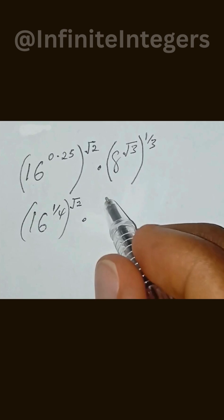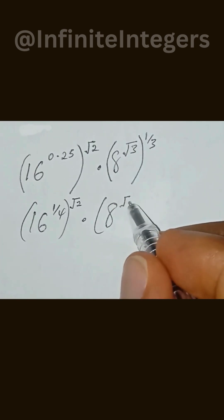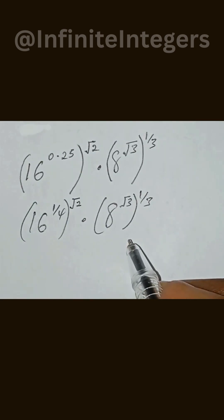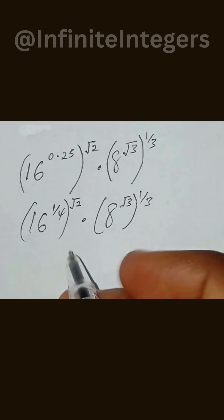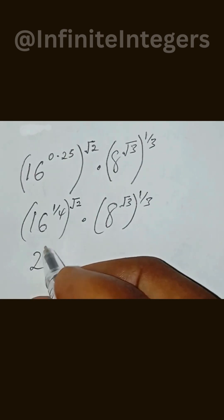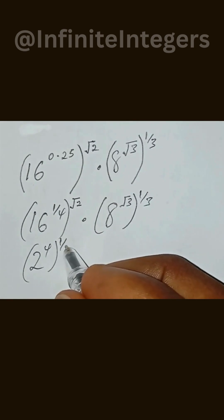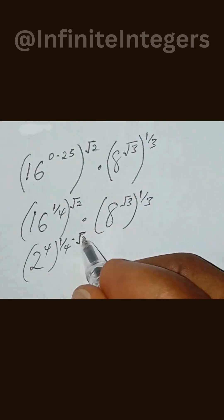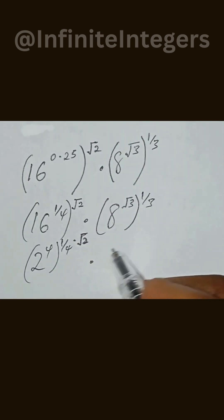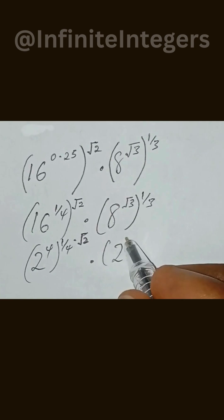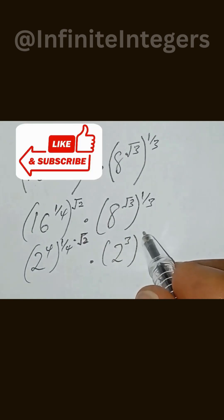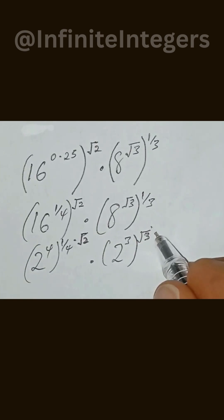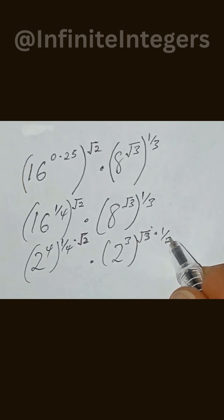Then multiply by 8 to the power of square root 3, in brackets, to the power of 1 over 3. Let's simplify: 8 and 16 — we write 16 as 2 to the power of 4, in brackets, to the power of 1 over 4. Then multiply by square root 2 to the power of square root 2. We have 2 to the power of 3, in brackets, to the power of square root 3. Then multiply by 1 to the power of 1 over 3.